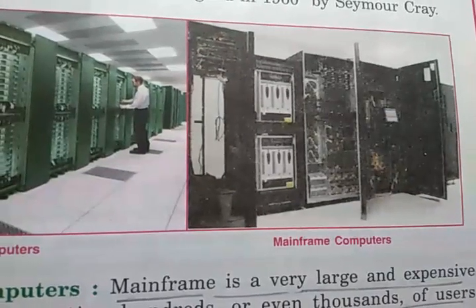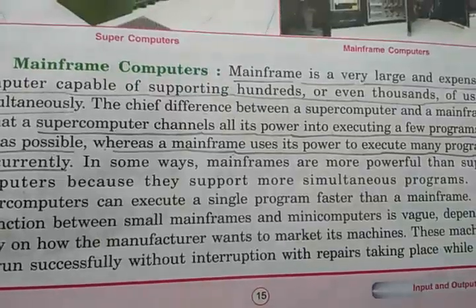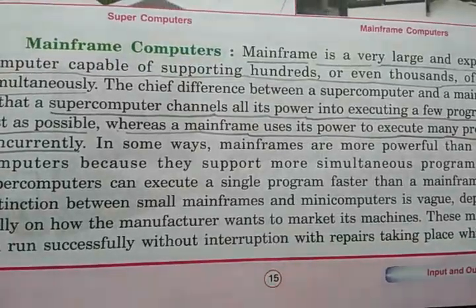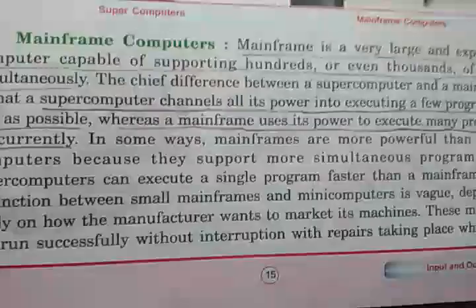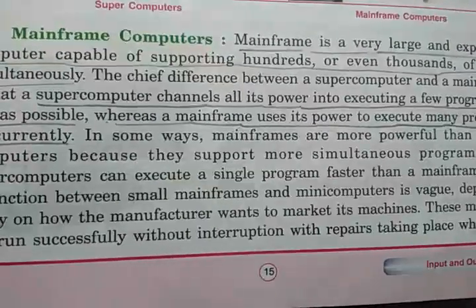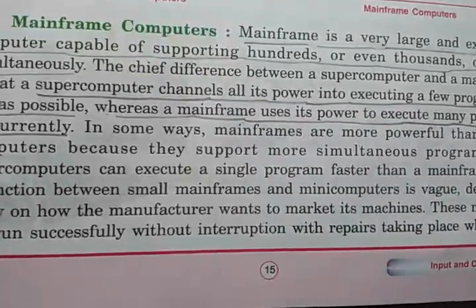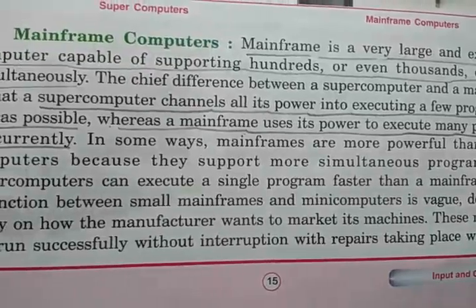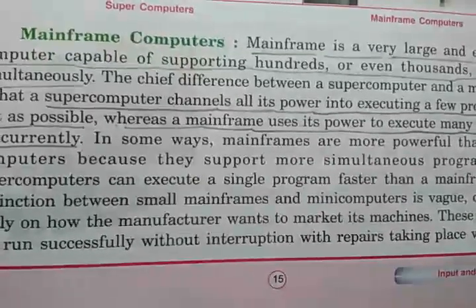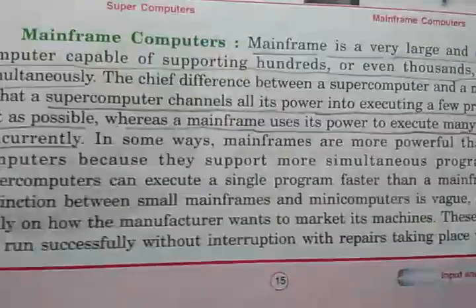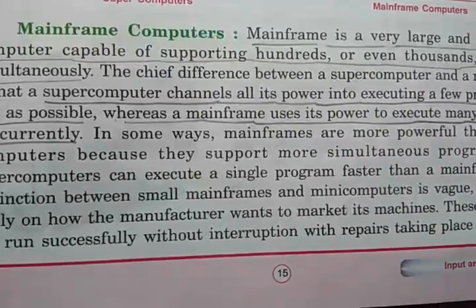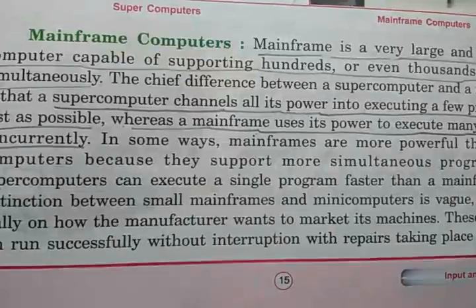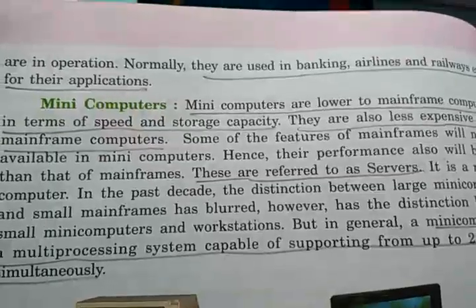The next type is the mainframe computer. Mainframe computers are used in large organizations such as universities, government colleges, etc. They have greater processing power, and multiple programs can be executed on these computers simultaneously. The major difference between a supercomputer and a mainframe computer is that a supercomputer performs a single calculation in less time, whereas a mainframe computer can perform multiple calculations simultaneously.